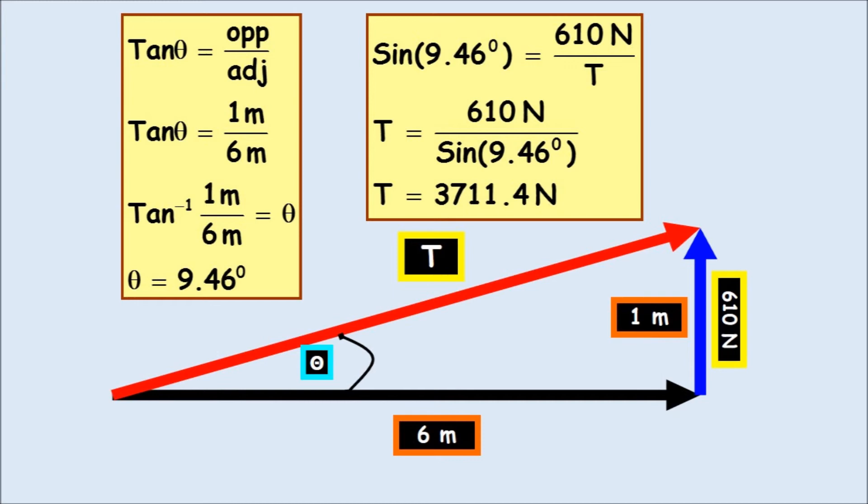So that's going to be sine. So the sine 9.46 degrees equals 610 over T. T equals 3711.4 Newtons. So you can see, the answer to B would be, why would you possibly tie the rope to the front of the car? Well, this is physics instead. It'd be much easier to do the problem.